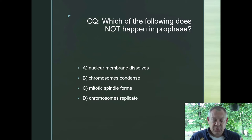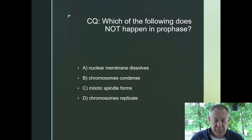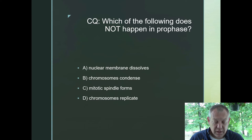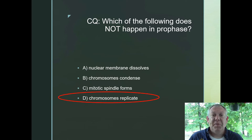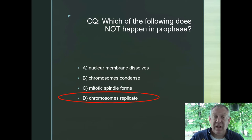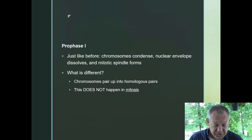Which of the following does not happen in prophase? The nuclear membrane dissolves, the chromosomes condense, the mitotic spindle forms, or the chromosomes replicate? The chromosomes replicate during S phase — the rest of this stuff all happens during prophase, and it's the same in meiosis.